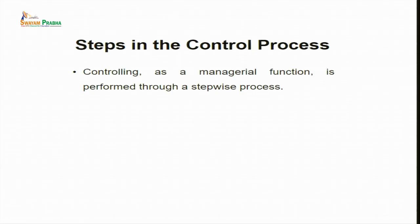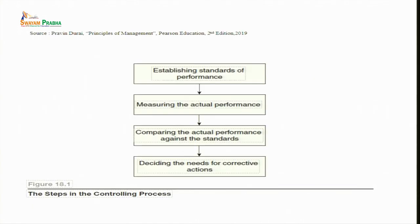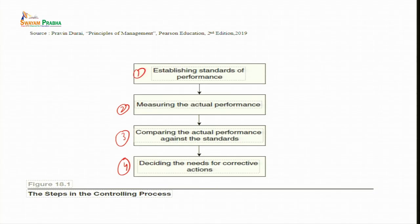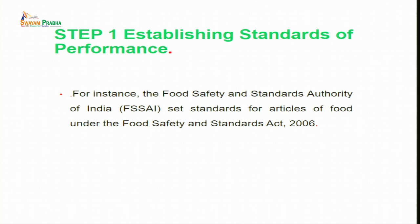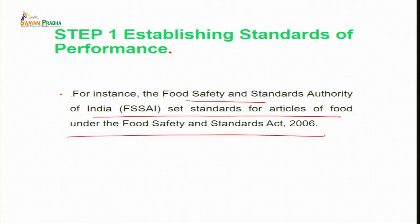Now let us see the steps in the control process. There are four steps: first, establishing standards of performance; second, measuring the actual performance; third, comparing the actual performance against the standards; and then deciding the need for corrective action if required. The entire control process begins with establishing performance standards against which actual organizational and individual performances are then compared later on. For instance, the Food Safety and Standards Authority of India sets the standards for articles of food under the Food Safety and Standards Act 2006.